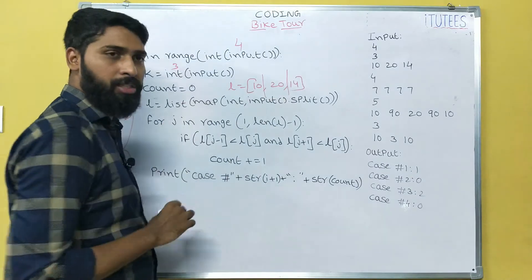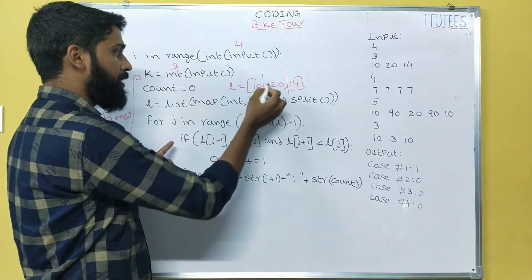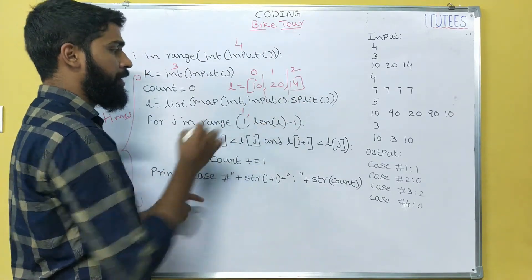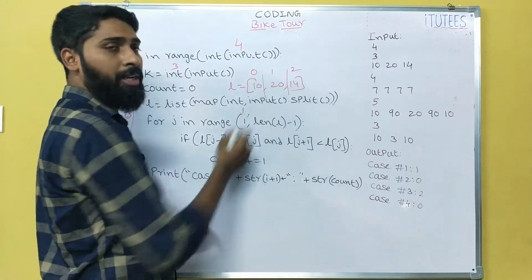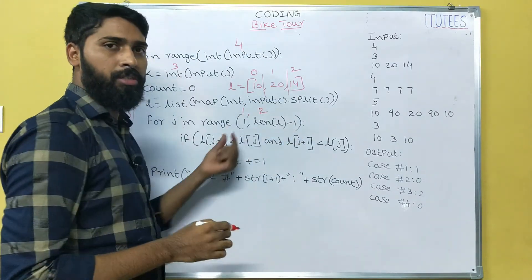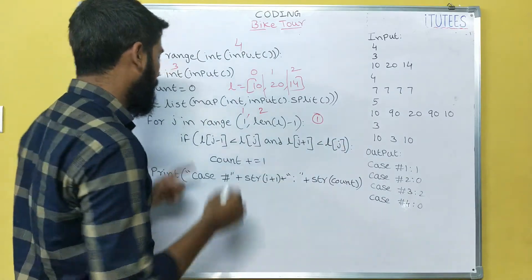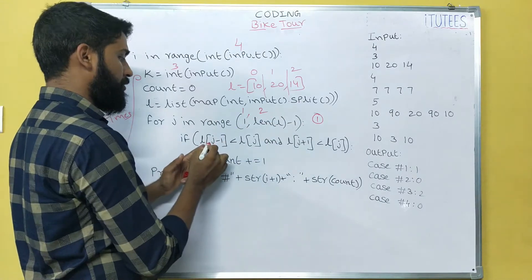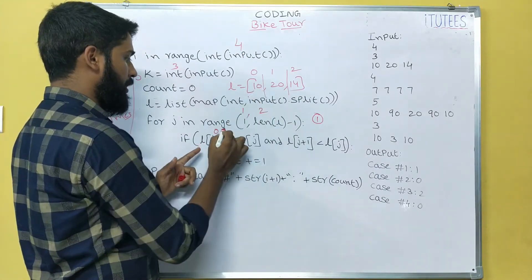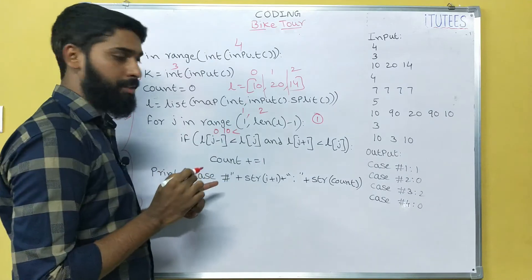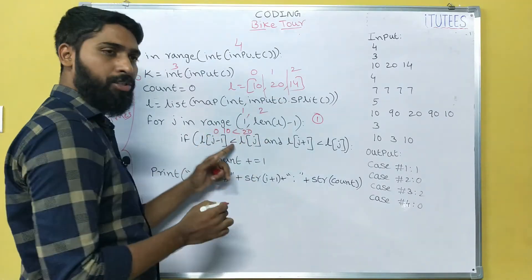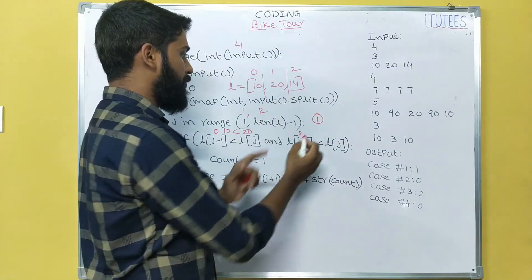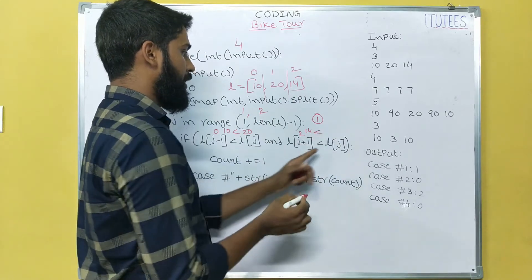In this problem, we ignore the first and last. So we use: for J in range(1, len(L) - 1). The indices are 0, 1, 2, and we iterate from 1 to len(L)-1 which is 2, giving us index 1 only. We check: if L[J-1] < L[J] — for J=1, L[0] is 10 and L[1] is 20, which is true. Then L[J+1], meaning L[2], is 40, and we check if 40 is less than 20.